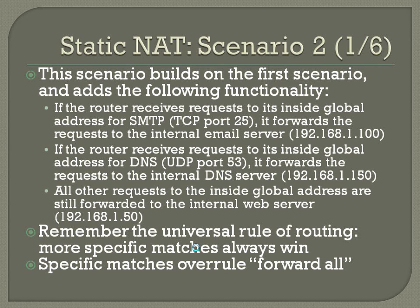Scenario number two builds on the first scenario and adds the following functionality: if the router receives a request to its inside global address for SMTP, TCP port 25, it forwards the request to the internal email server 192.168.1.100. For DNS, UDP port 53, it forwards to internal DNS server 192.168.1.150. All other requests to the inside global address are still forwarded to the internal web server 192.168.1.50. Remember the universal rule of routing: more specific matches always win, so specific port matches overrule the forward-all.